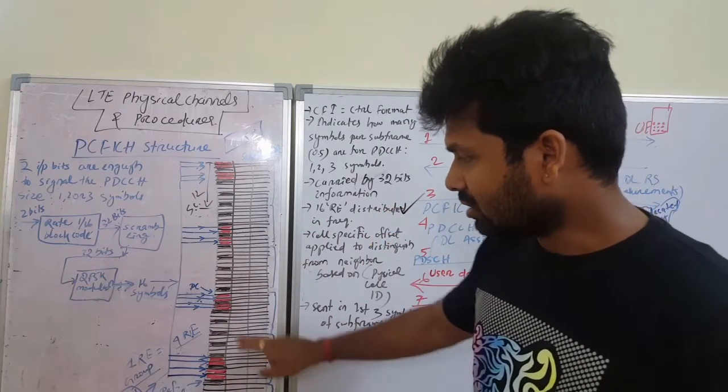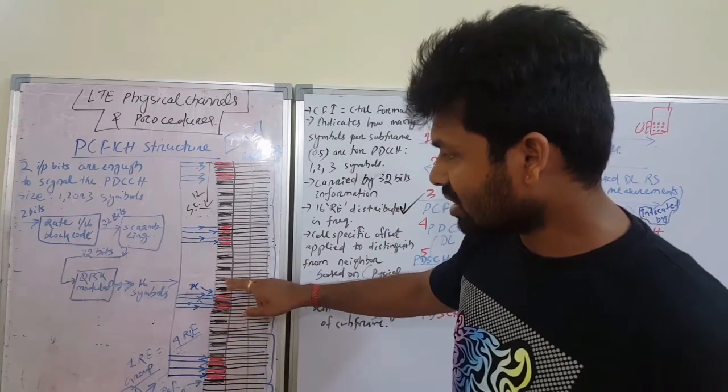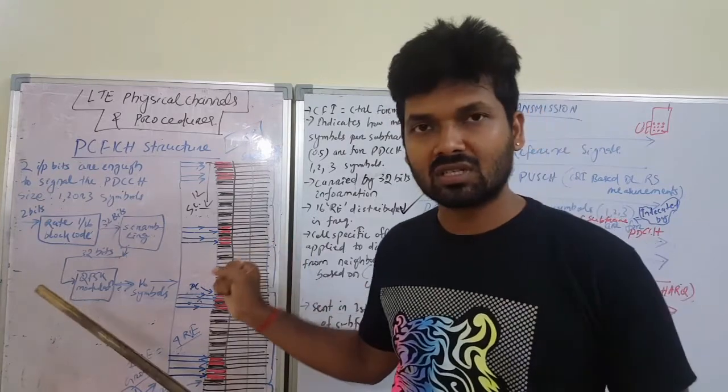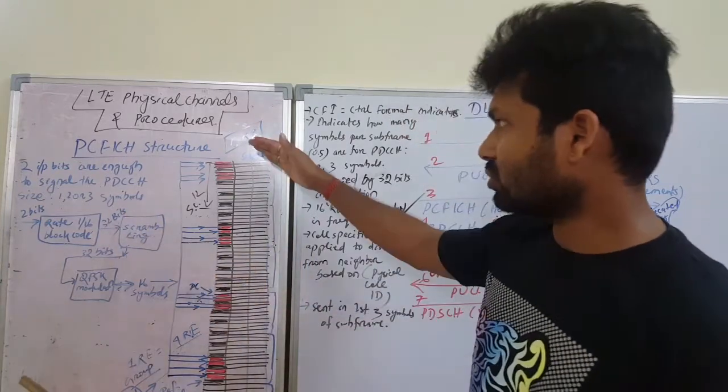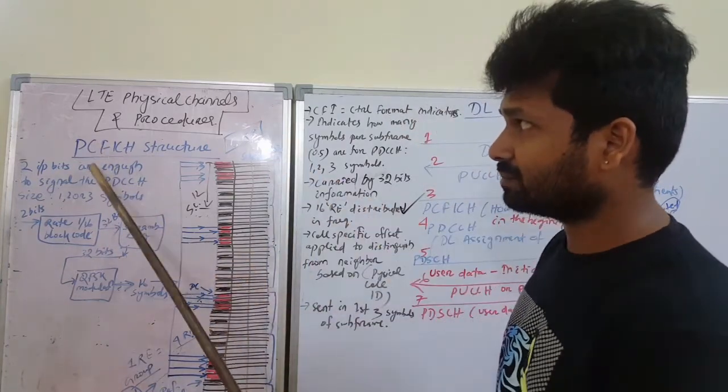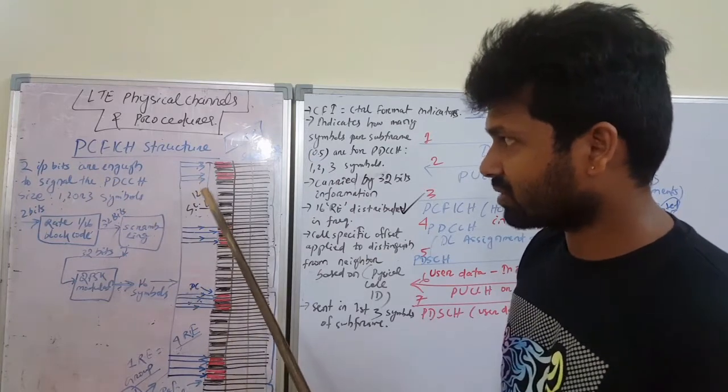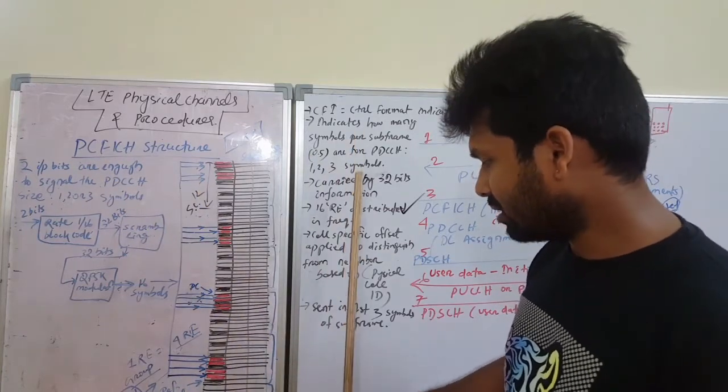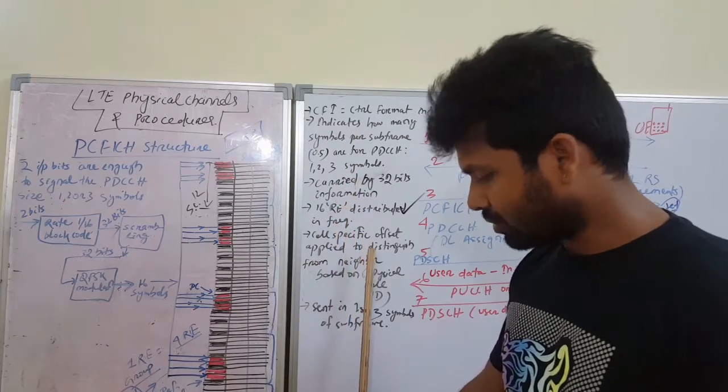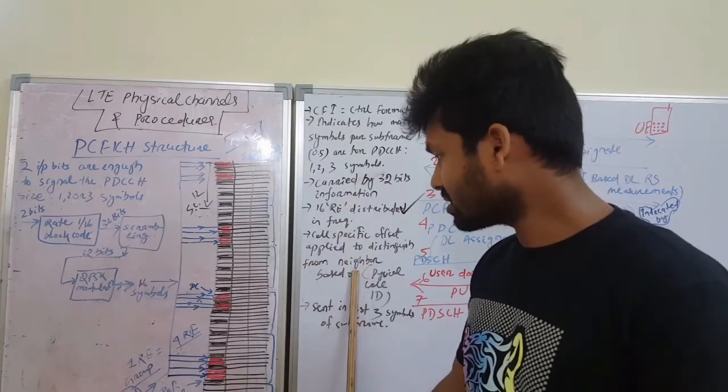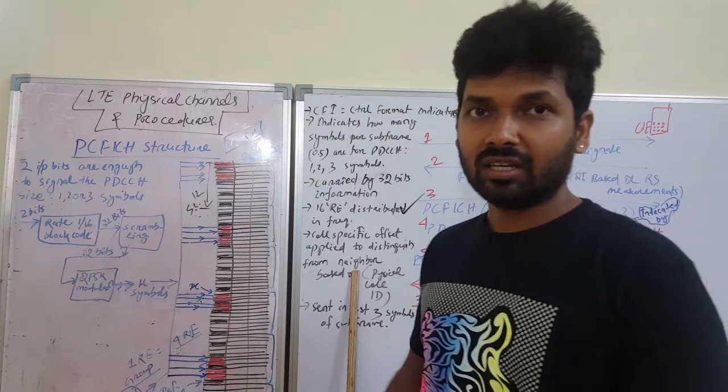And the black colored boxes are reserved for the reference symbol transmission. That is an example of an ECFICH channel structure. That's all for today, and in the next session - that means in